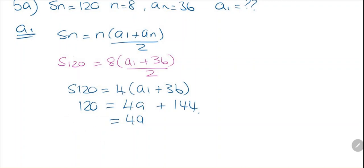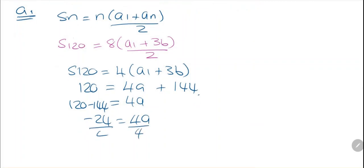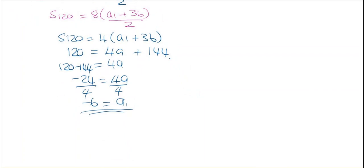That gives 4a1 = 24, but rearranging: 144 − 120 = 24, so we actually have −24 = 4a1... let me correct: 4a1 + 144 = 120, so 4a1 = 120 − 144 = −24. Dividing both sides by 4, a1 = −6.